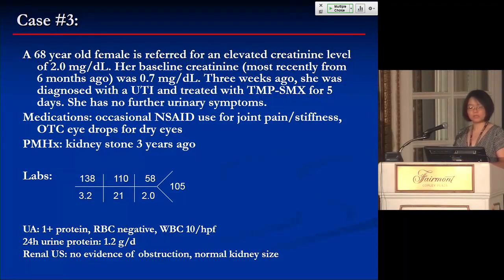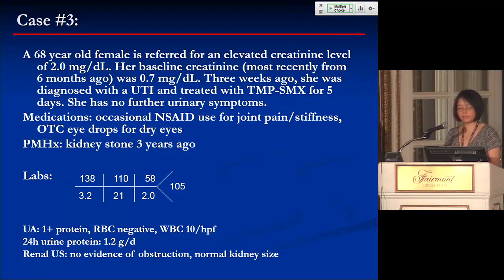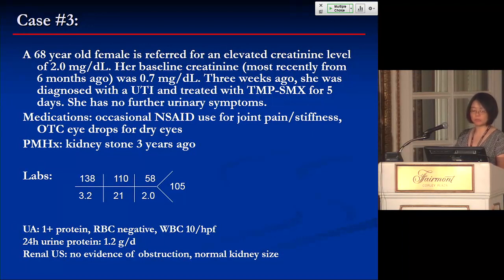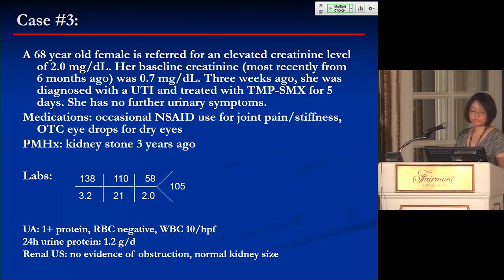Labs reveal sodium 138, potassium 3.2, chloride 110, bicarb 21, BUN 58, creatinine 2.0, glucose 105. UA shows 1-plus protein, RBCs negative, and 10 white blood cells per high-powered field. A 24-hour urine collection shows 1.2 grams of proteinuria per day. Renal ultrasound is unremarkable. Which of the following is the most likely cause of this patient's renal dysfunction?